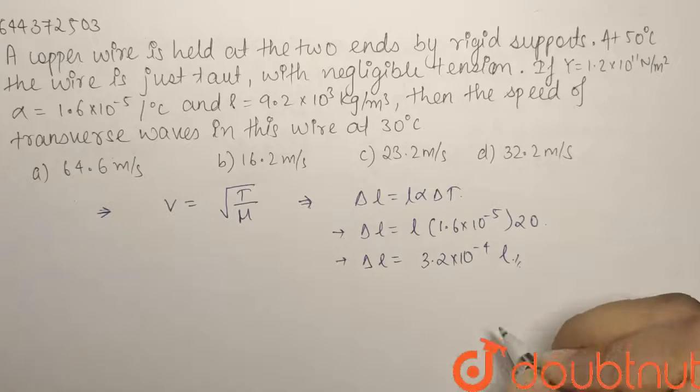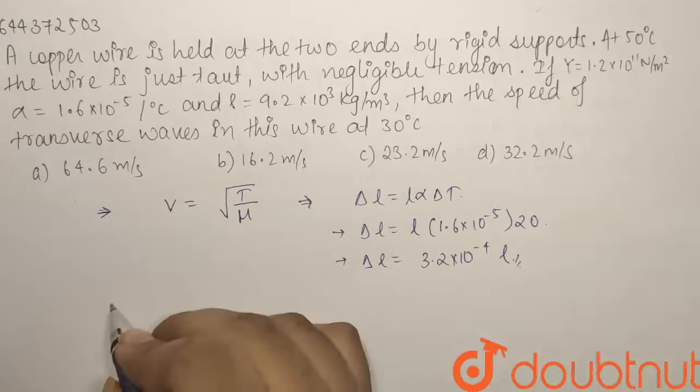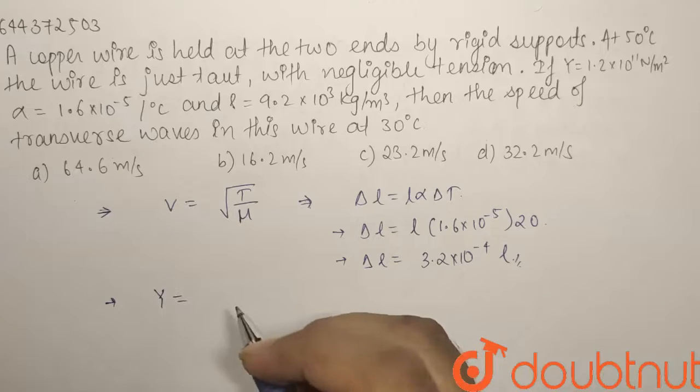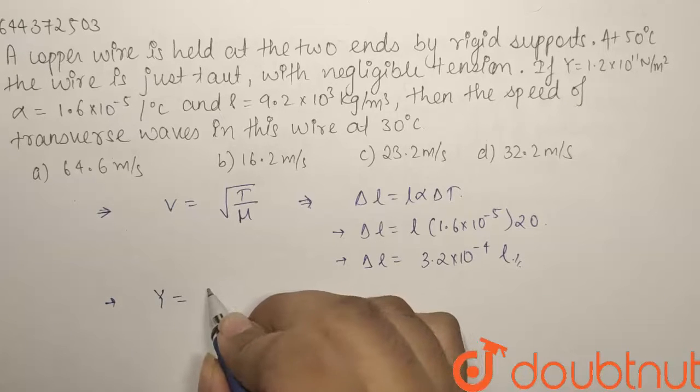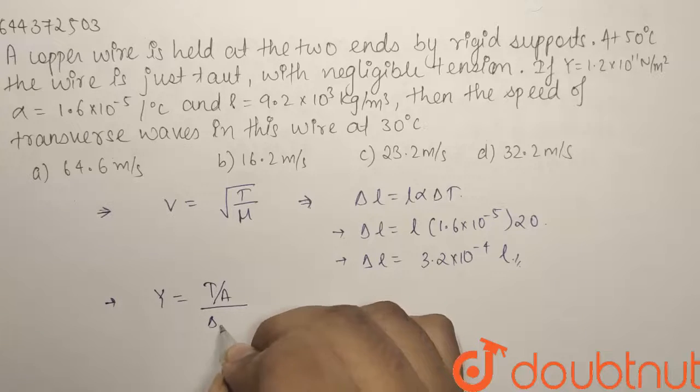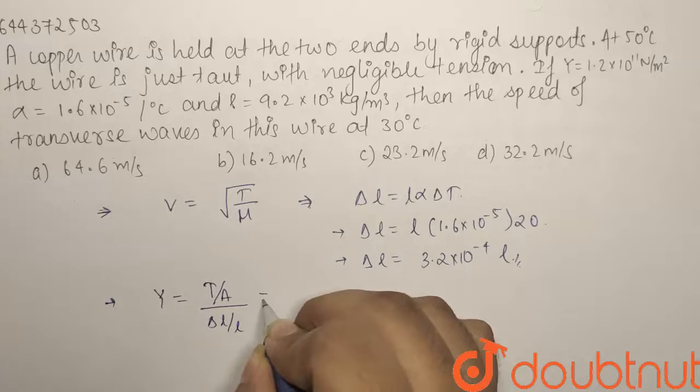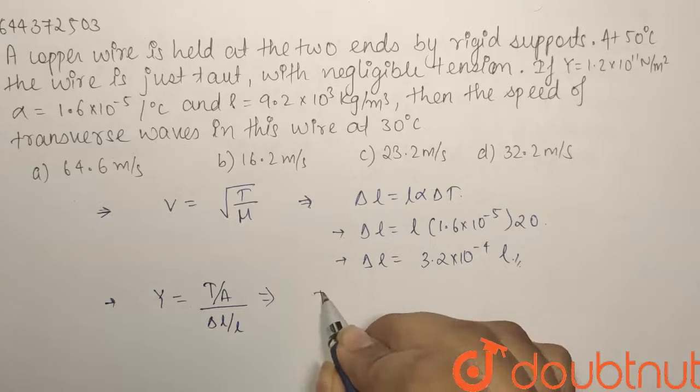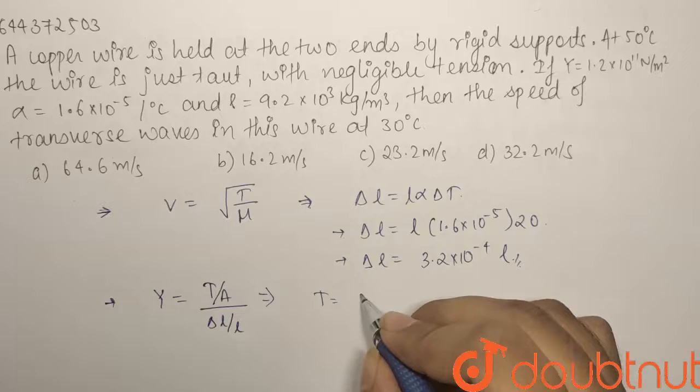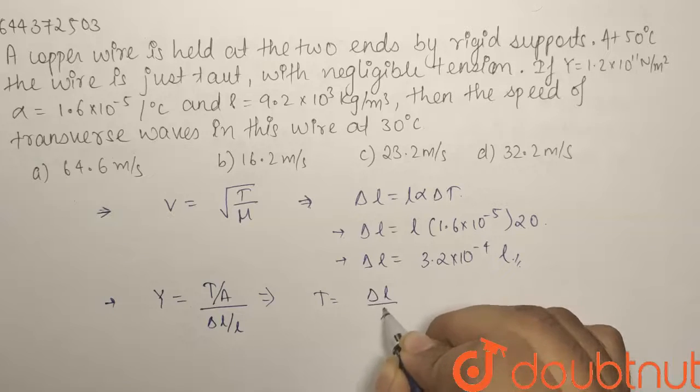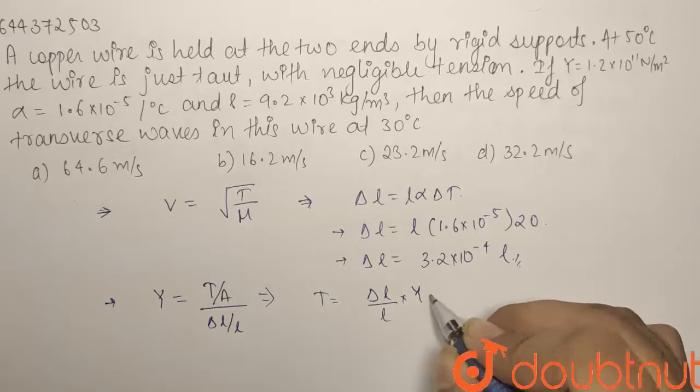Now, the other relation we know that the Young's modulus of a wire will be given by the stress upon the strain. What is stress? It is tension upon area upon what is strain: delta L by L. Putting in the values from here we can find out the tension.